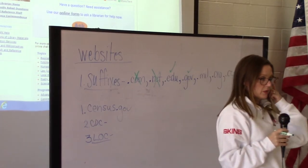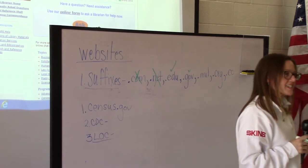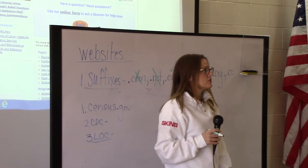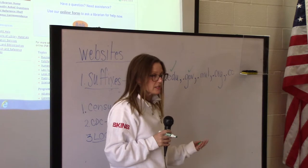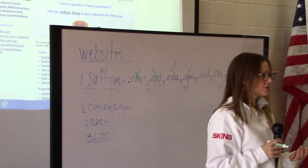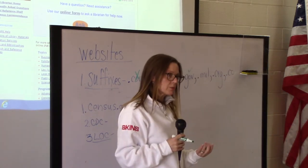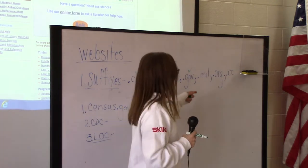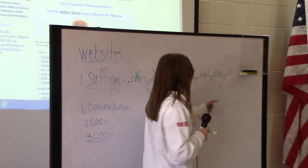What do you think the extension .mil is for? Military — the branches of military service. It's really treated very much like the government sites. With the Freedom of Information Act, each branch of the military also releases a lot of information, such as money allocations and troop allocations. Of course, not classified information, but a lot of basic information that you could use.